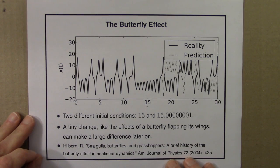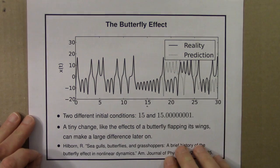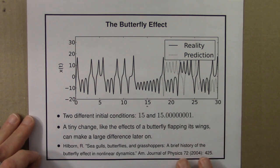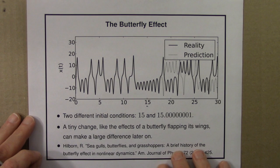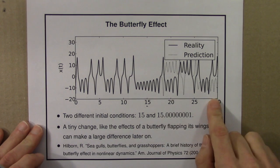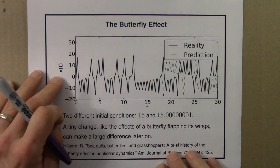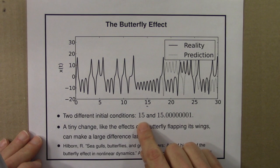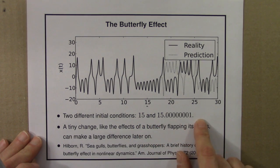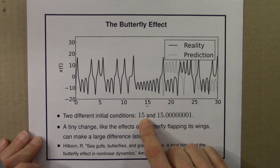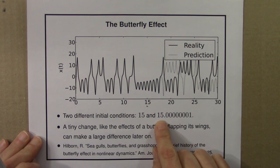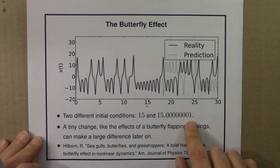Sensitive dependence on initial conditions is also known as the butterfly effect. You've probably heard this term before and know the story, but I should mention it briefly. The butterfly effect — here's this illustration. We have two different initial conditions; this is for the x part of the Lorenz equations. Two different initial conditions that differ by a tiny, tiny, tiny amount. We can think of this as 15 meters and this is 15 meters plus 10 nanometers.